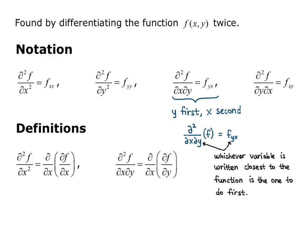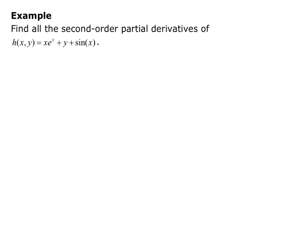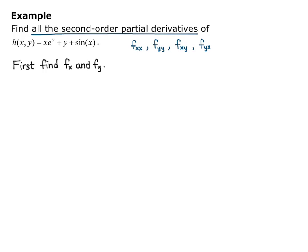Make sure you get a firm grasp on that notation so you'll know what you're being asked for in your homework. For our example, we want to find all the second-order partial derivatives of h of xy equals x times e to the y, plus y, plus sine of x. So we're looking for f sub xx, f sub yy, f sub xy, and f sub yx — all four of them. Our first step is going to be to find f sub x and f sub y, our first partial derivatives.